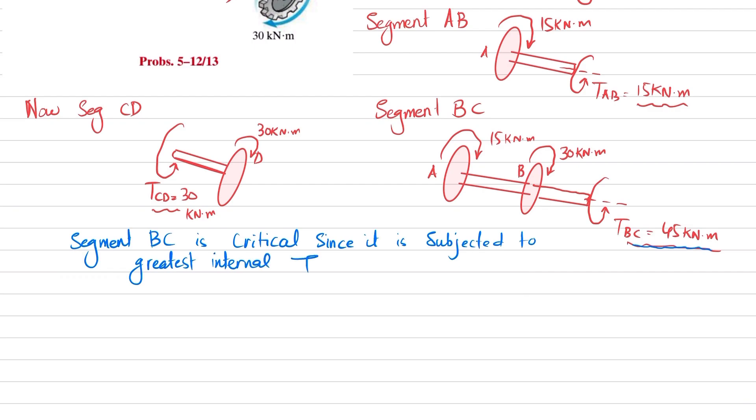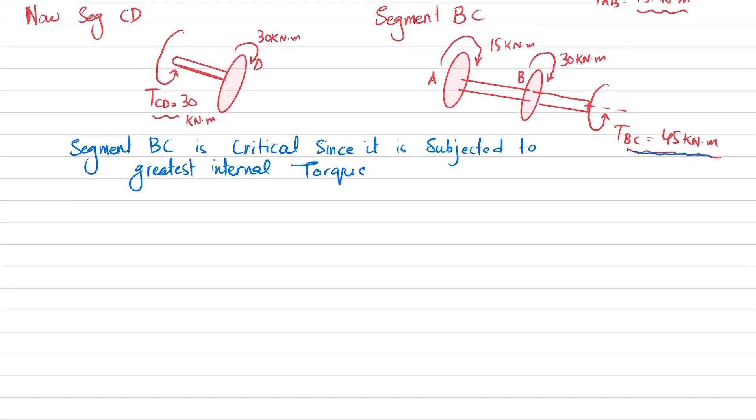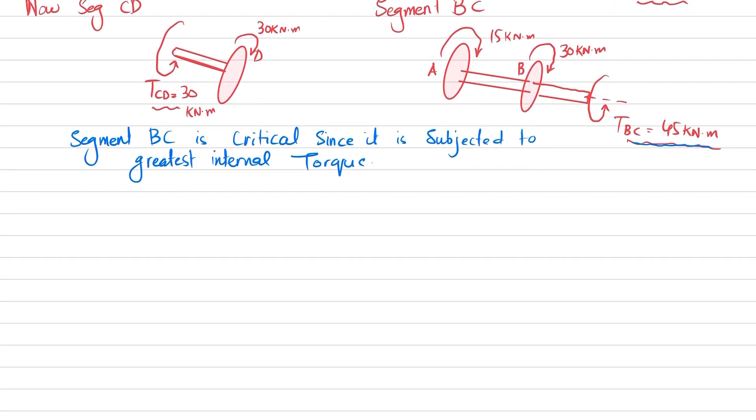Now we will use this greatest torque and we will find the thickness of this hollow shaft. We know that allowable shear stress equals TBC times c divided by J. We do not know J. J for hollow section equals pi by 2 times (c_outer to the power 4 minus c_inner to the power 4). You have only outer radius, so pi by 2 times 0.075 to the power 4 minus c_inner to the power 4.